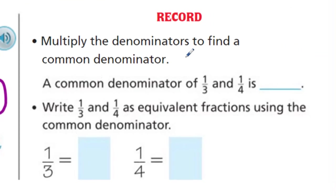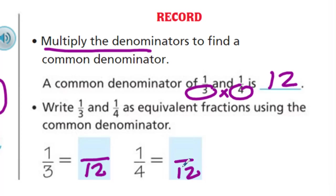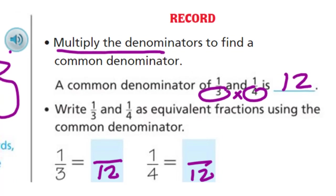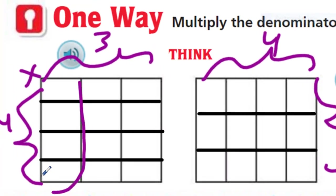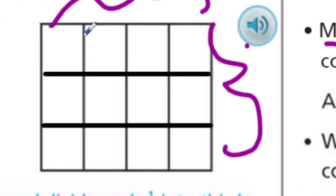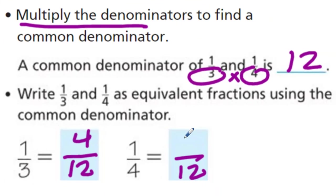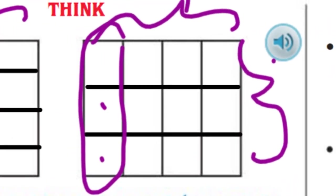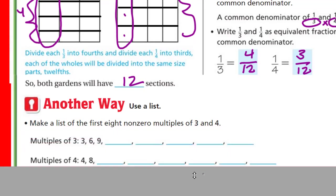It says here record. Multiply the denominators to find a common denominator. A common denominator of 1/3 and 1/4 is 12. So, if we did multiply the denominators, we would get a common denominator. That will always happen. Write 1/3 and 1/4 as equivalent fractions using the common denominator. So, if the denominator is the same because it's common, then that means I would put my twelve down there. Now, in this case, 1/3, by just looking at what this was here, this used to be our one-third part here. You can see by just looking, now we have four sections. So, that's equal to 4/12.